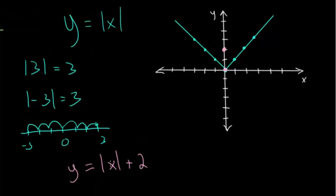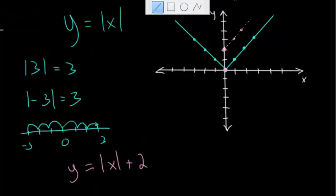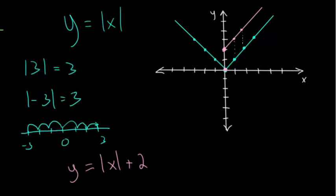If you plug in one, then one plus two is three. If you plug in two, then you get two plus two, which is four. You can see this blue line is essentially shifted up. Every point is exactly two points higher.